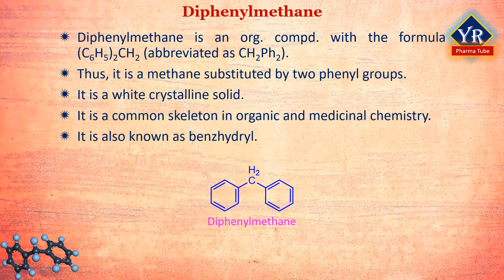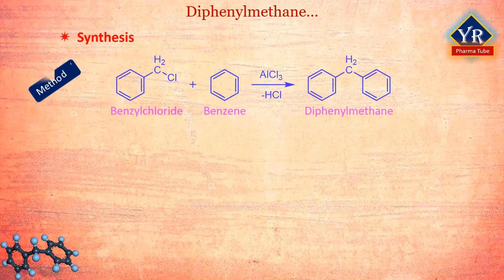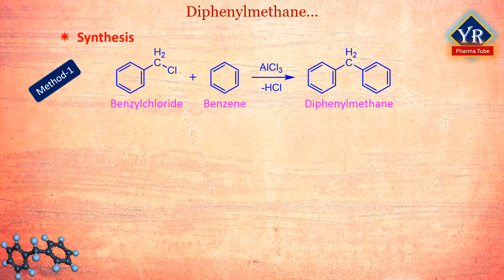The diphenylmethane group is also known as benzhydryl, and its reactions are similar to those of diphenyl. Diphenylmethane is prepared by the Friedel-Crafts alkylation of benzyl chloride with benzene in the presence of a Lewis acid such as aluminum chloride.